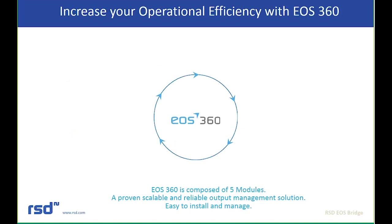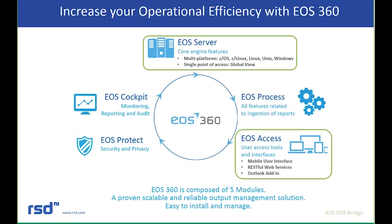Thank you, Jim. What we're going to talk about first is the 50,000-foot view of EOS 360. EOS 360 is grouped into five components: the EOS server, the EOS process — which handles all ingestion whether through a writer, the FSS, or the TCT — and one of the newer components, EOS access, which is a replacement for the thin client.